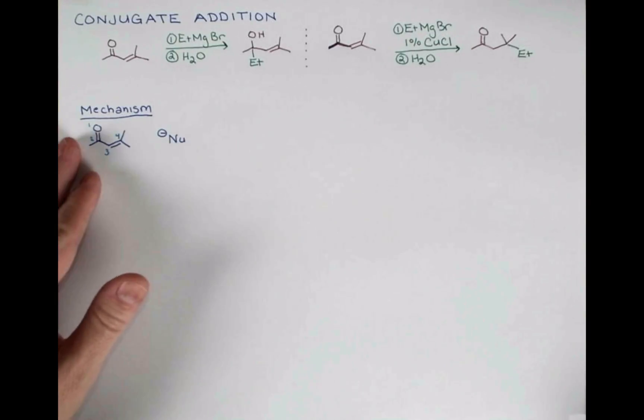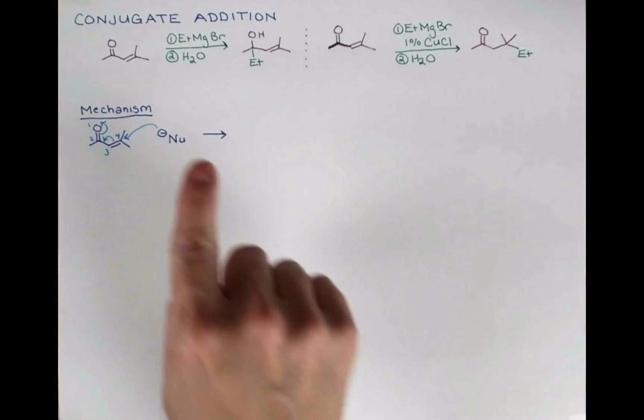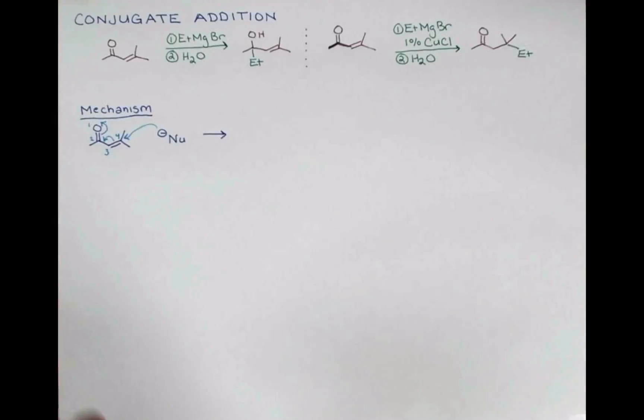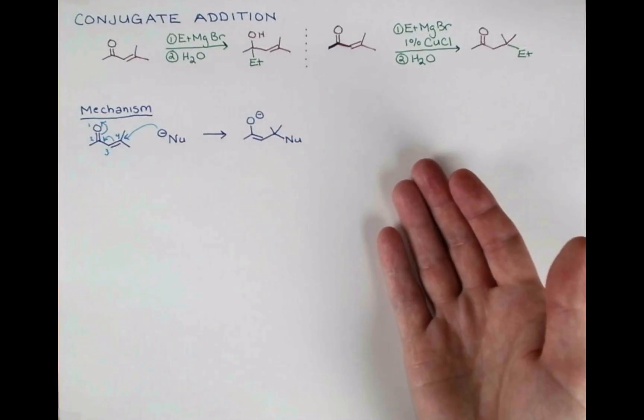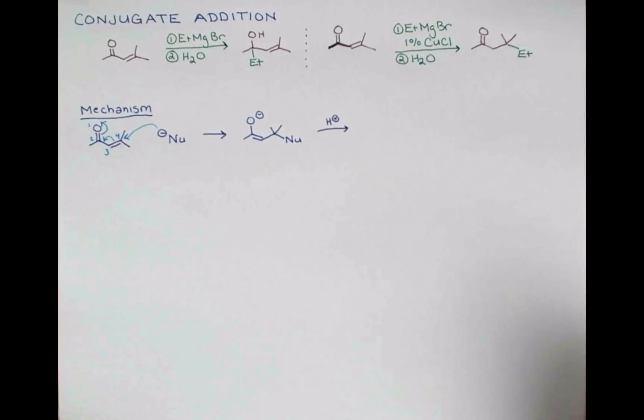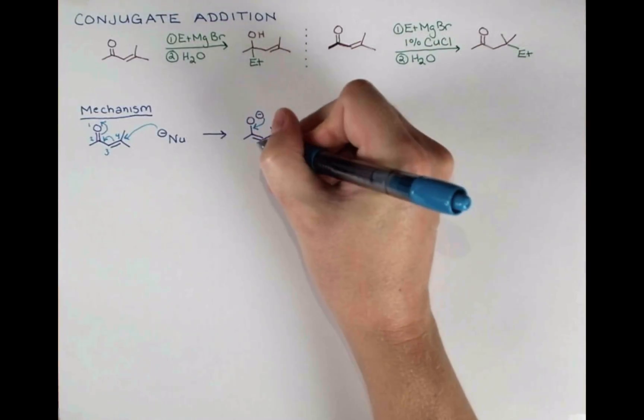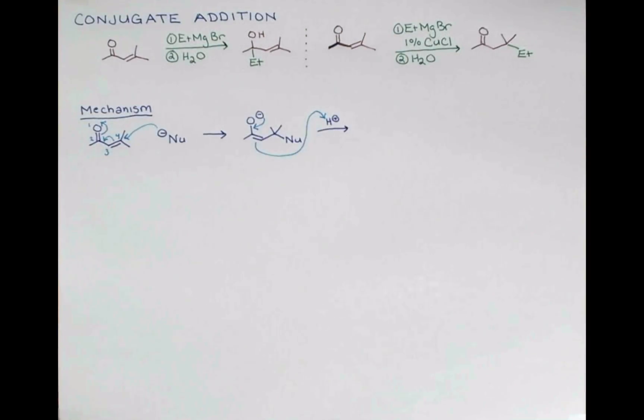So when we have an enone and an appropriate nucleophile for 1-4 Michael addition, we can draw our arrow pushing this way. The nucleophile bonds here, this double bond shifts over, and the electrons go up onto oxygen. Now when we work this up with water or maybe a slightly acidic solution, we can show the carbonyl double bond reforming and these electrons attacking the proton.